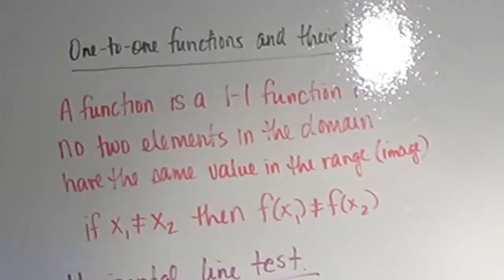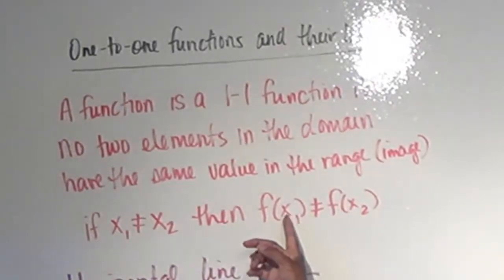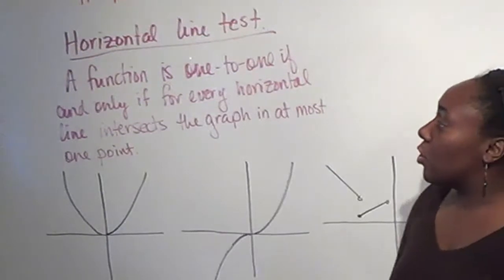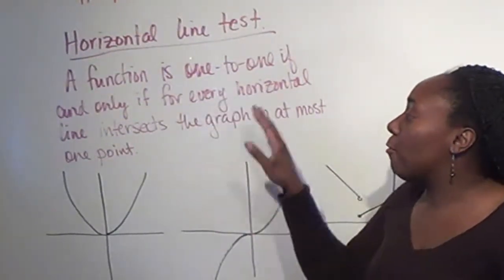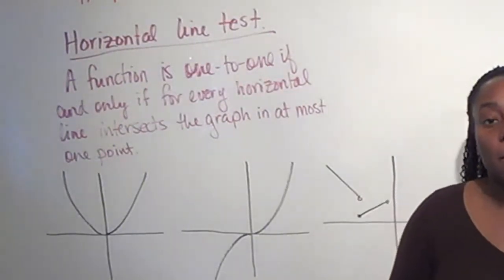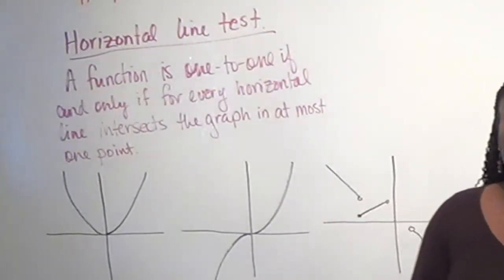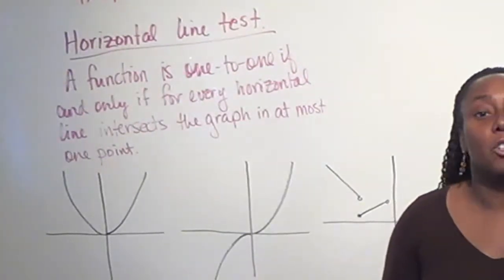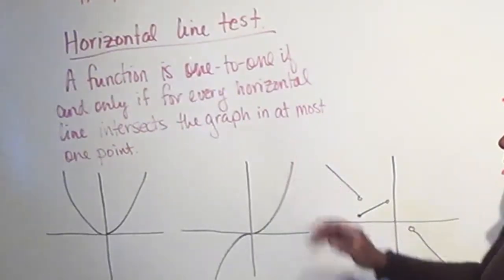Mostly you're going to be looking at the algebraic form of the function or the graphical form, so it's not always going to be easy to determine if this is true for every value of x. What we can use is the horizontal line test. A function is one-to-one if and only if for every horizontal line that intersects the graph, it does so at most one point. The if and only if means it goes both directions.